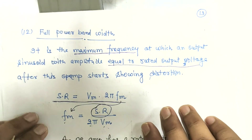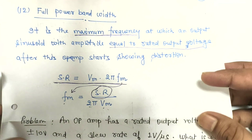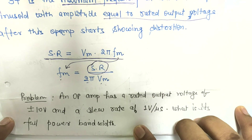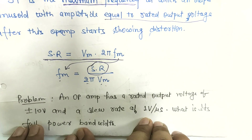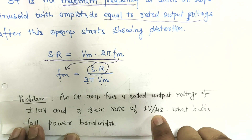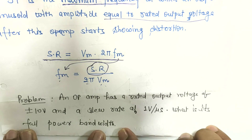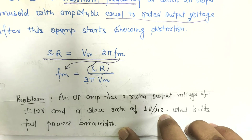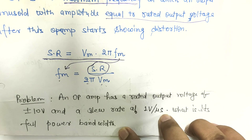Let us consider one question based on the slew rate. An operational amplifier has a rated output voltage of ±10 volts and a slew rate of 1 volt per microsecond. What is its full power bandwidth? Using the above equation, you can easily calculate the answer. Write the answer in the Google Classroom question 1 instead of putting it in the comments.